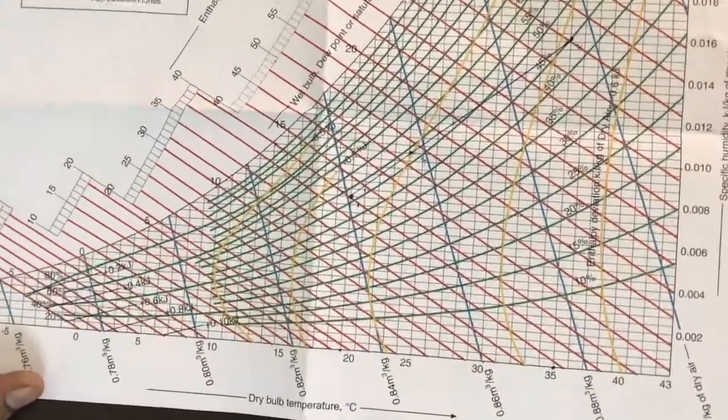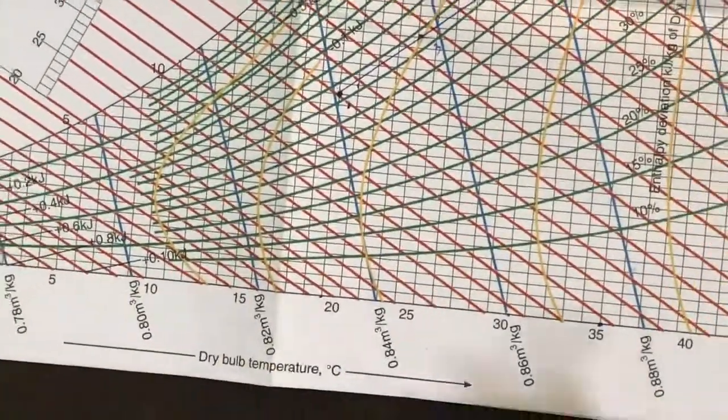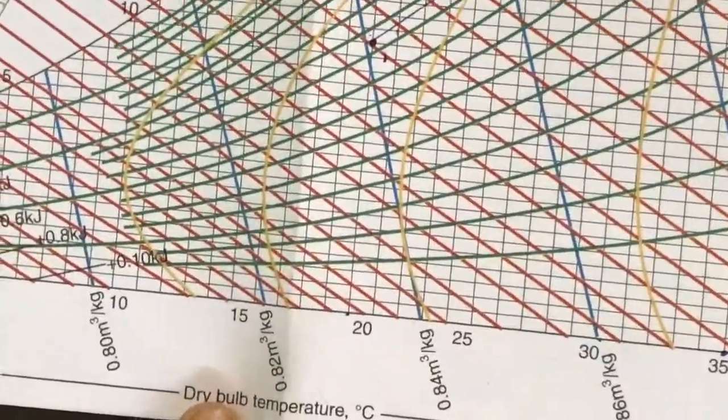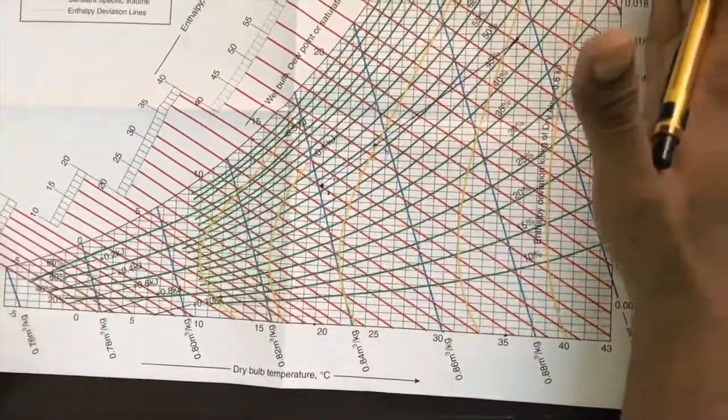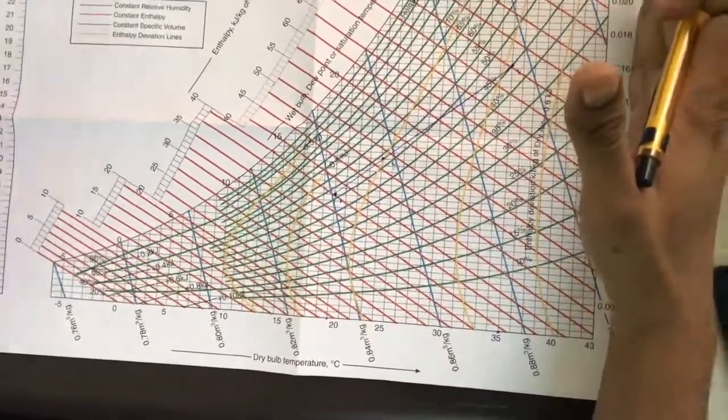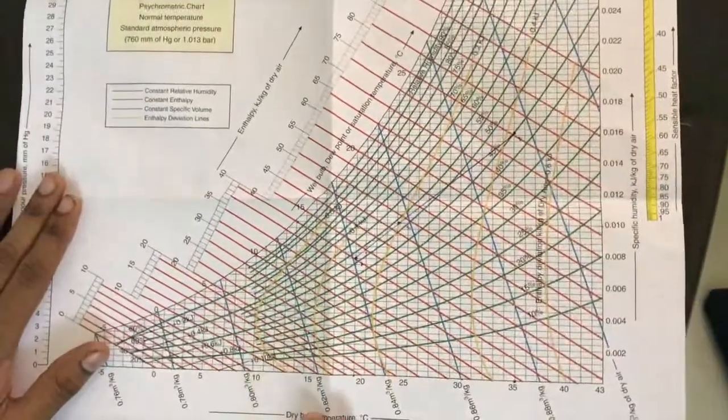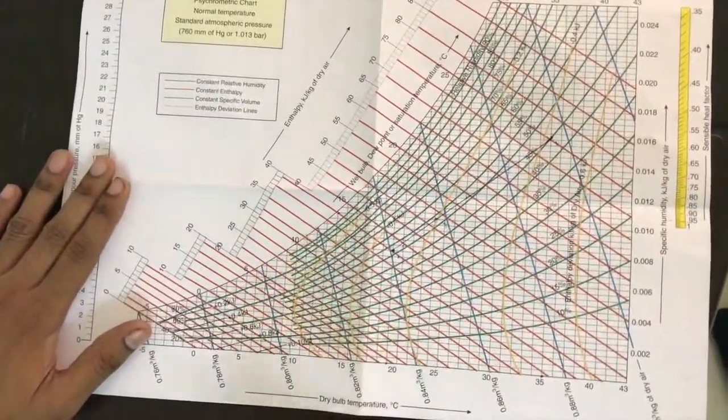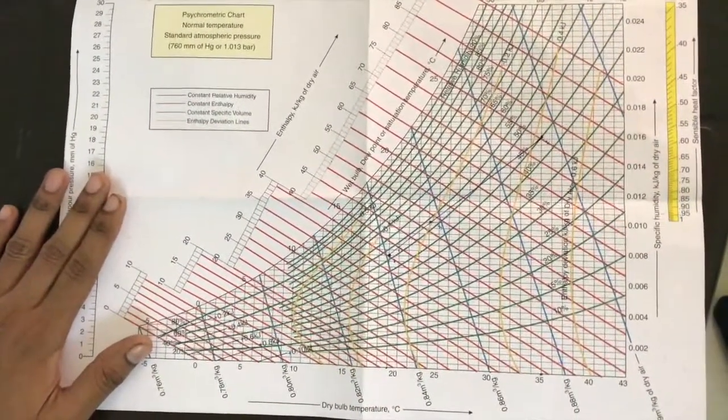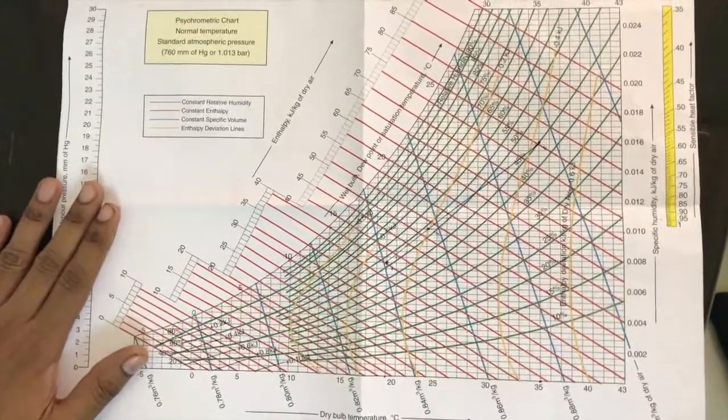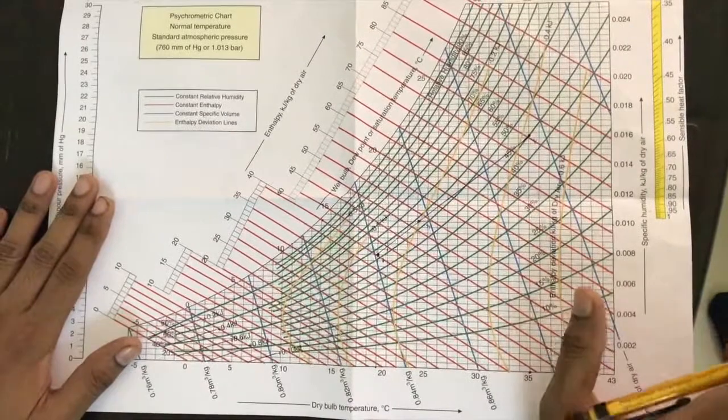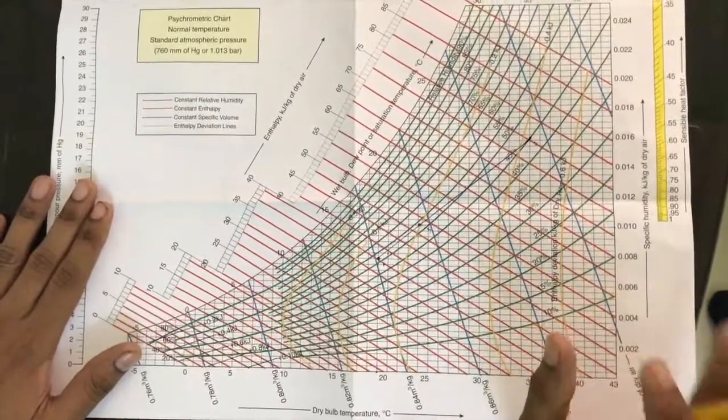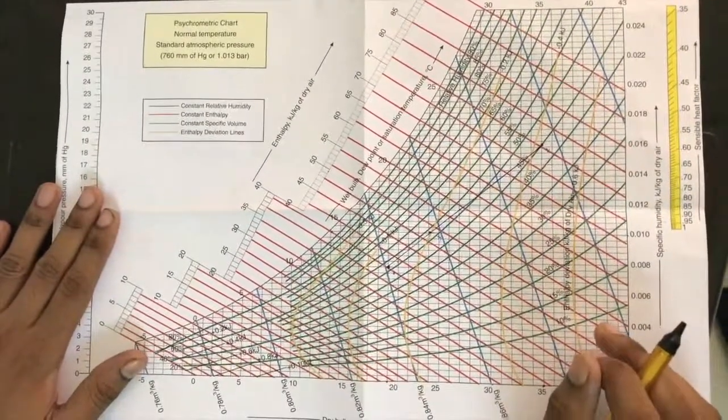Here in the abscissa we can see dry bulb temperature and here there is specific humidity available. There is vapor pressure available. Dry bulb temperature is the usual temperature of air when we are measuring it with a thermometer, and the specific humidity means it is the kilogram of moisture per kilogram of air.